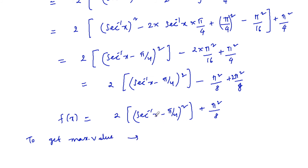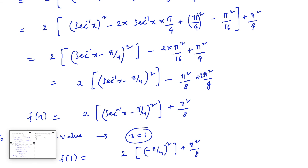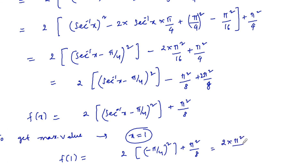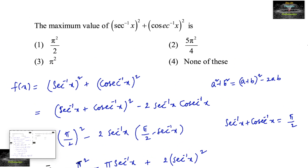To get the maximum value, we consider sec⁻¹x = 0, which means x = 1. So f(1) = 2·(0 - π/4)² + π²/8 = 2·(π²/16) + π²/8 = π²/8 + π²/8 = 2π²/8 = π²/4. Therefore the maximum value is π²/4, which corresponds to the fourth option.